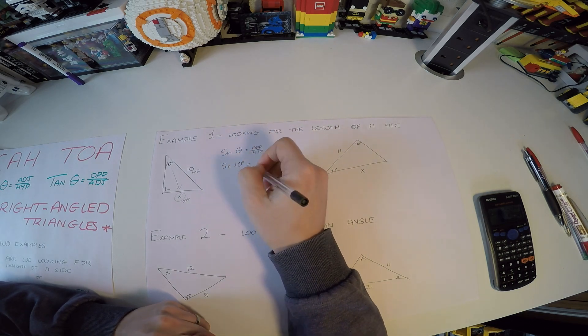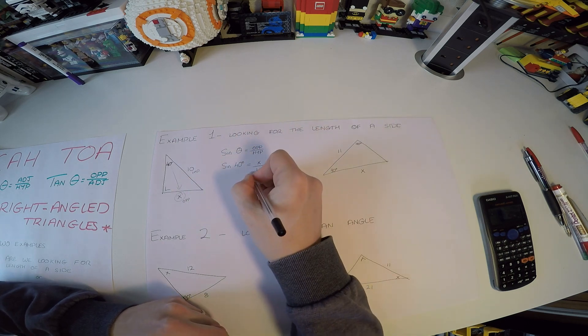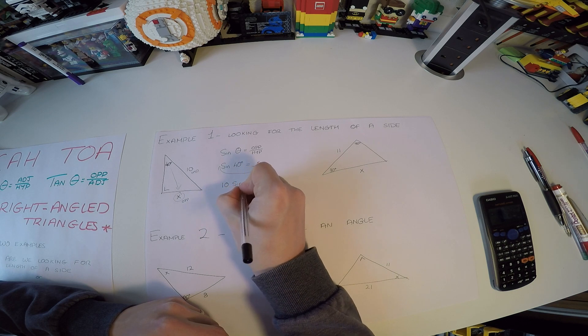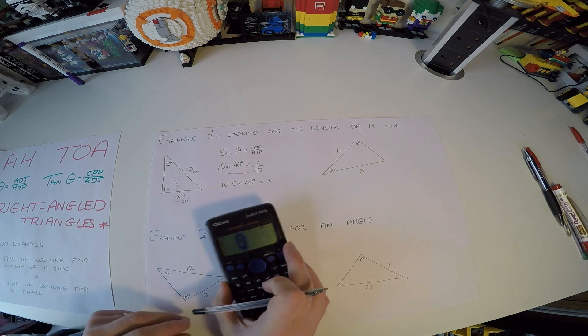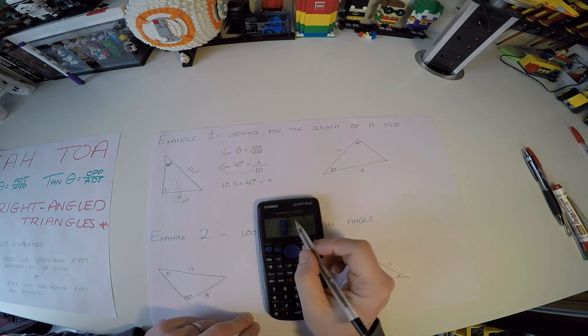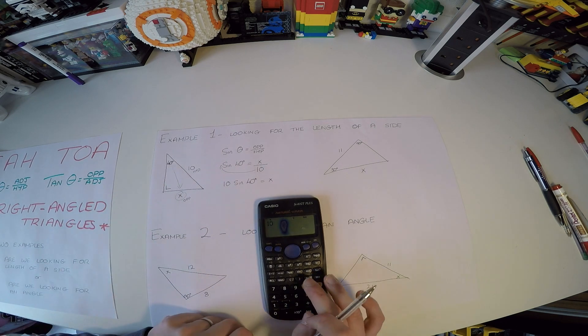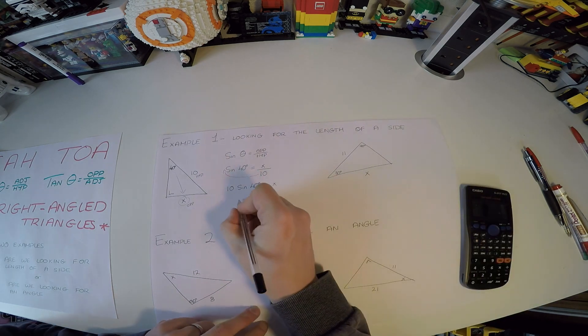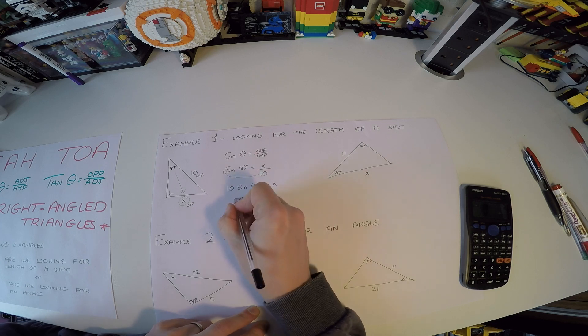Now, using the rules of maybe cross multiplication or whatever you like, multiplying across by 10, we can just move this 10 up in front of the sine here. So that goes 10 sine of 40 degrees equals X. Now, we put that into our calculator. We can put it in literally like that. Make sure your calculator is in degrees, because we're using degrees in our angle. So 10 sine and 40, and I get 6.43 if I round it up. So 6.43 should be equal to X, and that's the first one done.